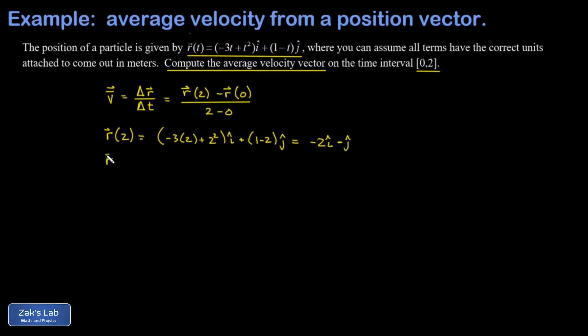Then we compute r of 0. That should be pretty simple. And when I plug in t equals 0, my i hat term, that's negative 3 times 0 plus 0 squared. Well, that vanishes. And then my j hat term is just plus 1 j hat.